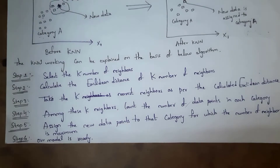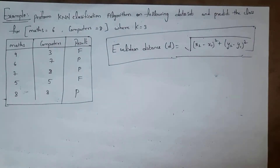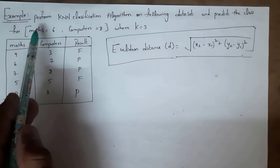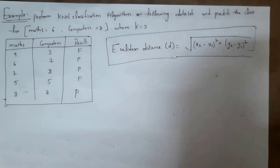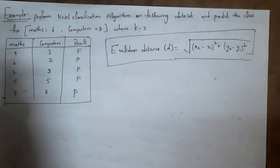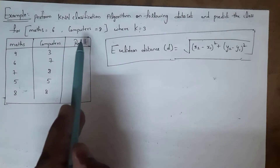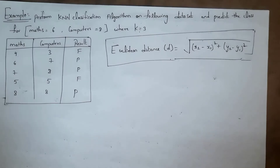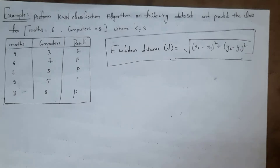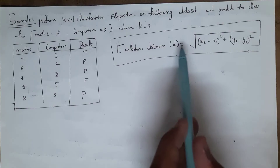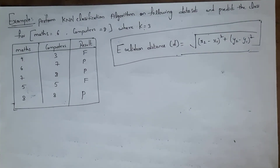Now let's solve an example. Perform KNN classification on the following dataset and predict the class for marks = 6 (math) and marks = 8 (computers), where k = 3. The dataset has three attributes: marks in mathematics, marks in computers, and result. To find the nearest neighbors, we use the Euclidean distance formula: √((x2 - x1)² + (y2 - y1)²).